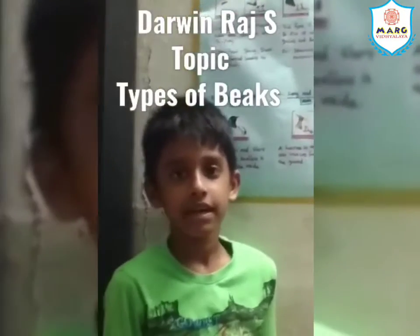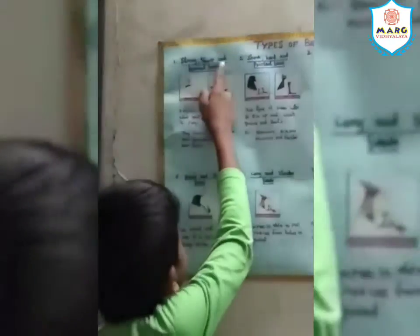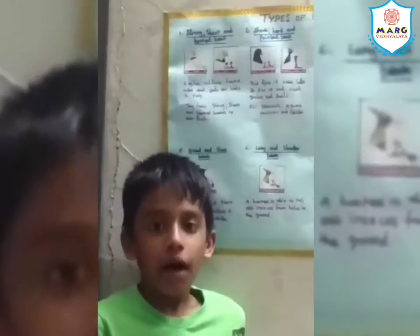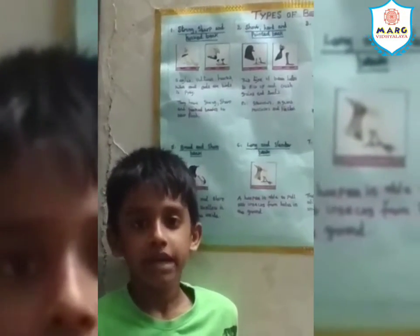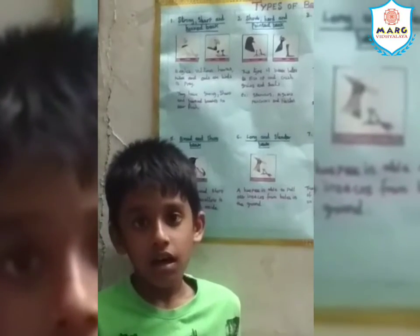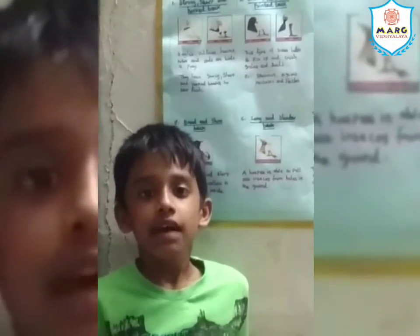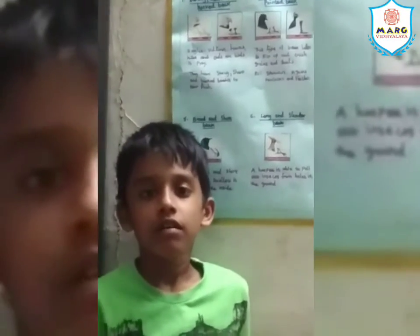Hello everyone. I am going to tell about types of beaks. Strong, sharp and hooked beaks: eagles, vultures, hawks, kites and owls are birds of prey. They have strong, sharp and hooked beaks to tear flesh.